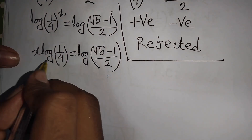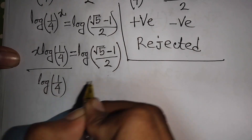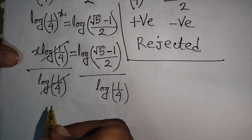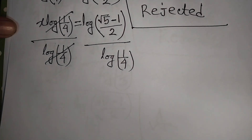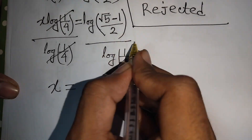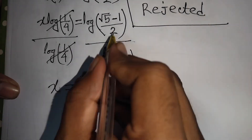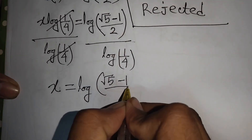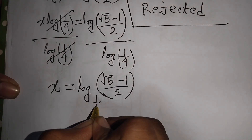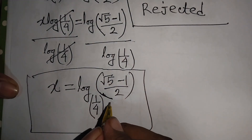We divide both sides by log(1/4), so log(1/4) cancels on the left. Therefore x equals log((√5 minus 1)/2) divided by log(1/4), which can be written as log base (1/4) of (√5 minus 1)/2. This is our final answer.